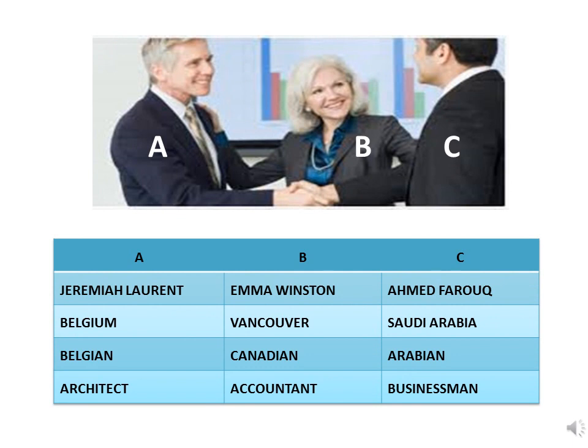Pay attention to A, B, and C while they are introducing themselves. A: My name is Jerenia Laurent. I am from Belgium. I am a Belgian, and I am an architect. B: I am Emma Winston. I come from Vancouver. I am a Canadian, and my job is an accountant. C: My name is Ahmed Farouk. I come from Saudi Arabia. My nationality is Arabian, and I am a businessman.